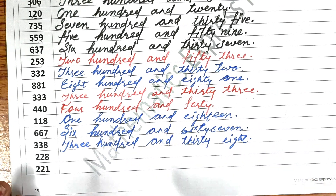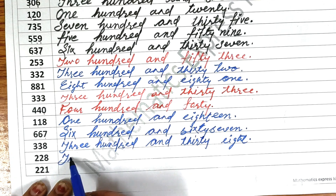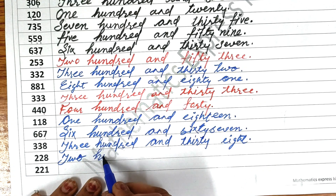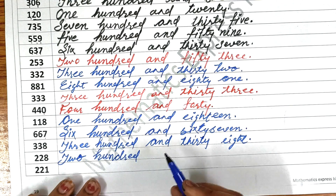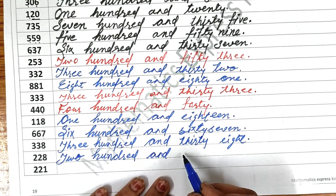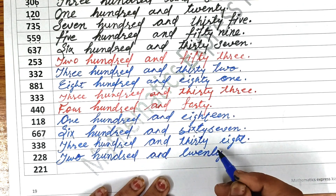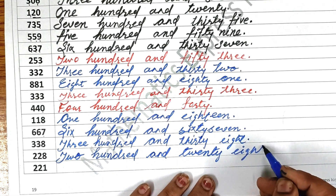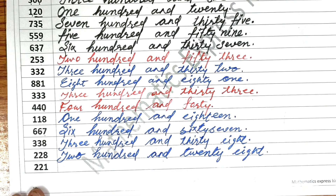The next one is two hundred and twenty-eight. Write T-W-O — two hundred — H-U-N-D-R-E-D — and twenty-eight: T-W-E-N-T-Y — twenty-eight — E-I-G-H-T. Two hundred and twenty-eight. Okay.